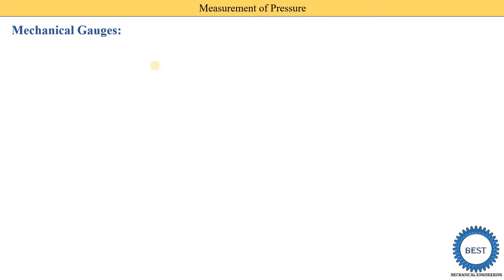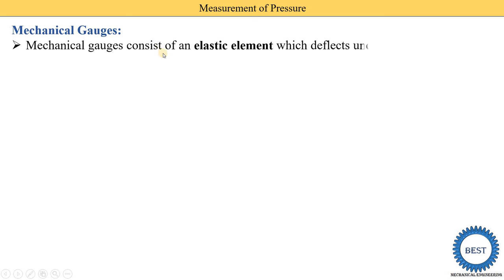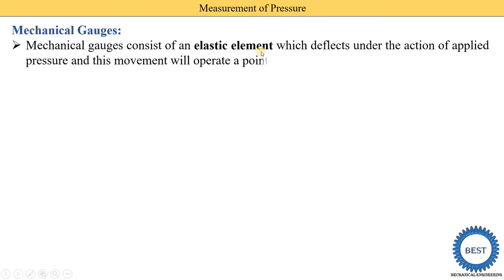The second classification of pressure measurement devices is the mechanical gauge. A mechanical gauge consists of an elastic element which deflects under the action of applied pressure, and this movement operates a pointer on a graduated scale. Unlike manometers, no glass tube is used; instead, the deflection of the elastic element drives a pointer to display the pressure reading.